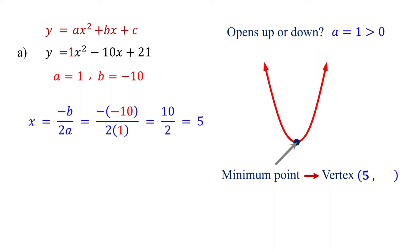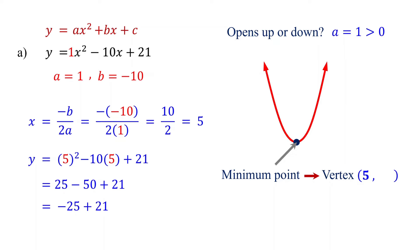Now, to find its y-coordinate, substitute its x-coordinate back into the original function. Simplifying this, we find that y equals negative 4. So the y-coordinate of the vertex is negative 4. The minimum value of a quadratic function is the y-coordinate of the vertex, which is negative 4 in this case. This occurs when x equals 5.